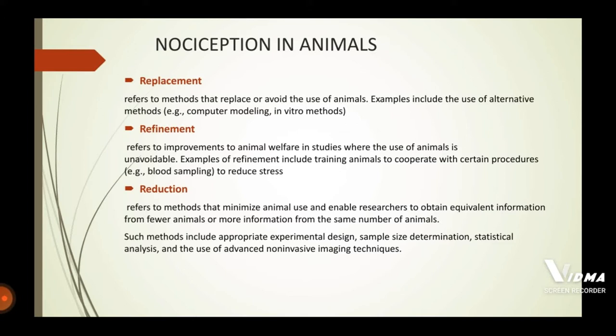Refinement refers to improving or optimizing methods where the use of animals is unavoidable. This includes training animals to cooperate with certain procedures, such as blood sampling, to reduce stress or anxiety. Reduction refers to methods that minimize animal use for research purposes.